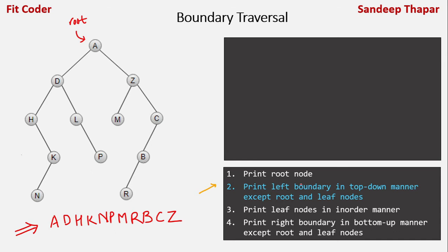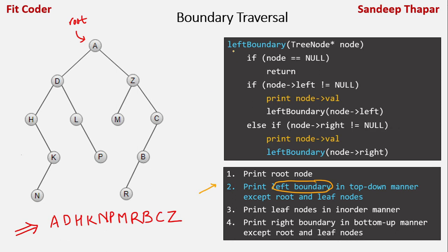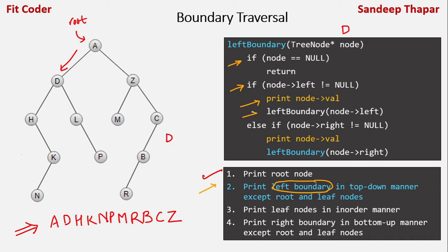The second step is to print the left boundary in a top-down manner, excluding the root and the leaf nodes. The first call to the left boundary function is for node D, since the root has already been handled. We pass the left child of A, which is D. We check if the node is null, then check if left of D (which is H) is not null — so we print D and recurse with H.